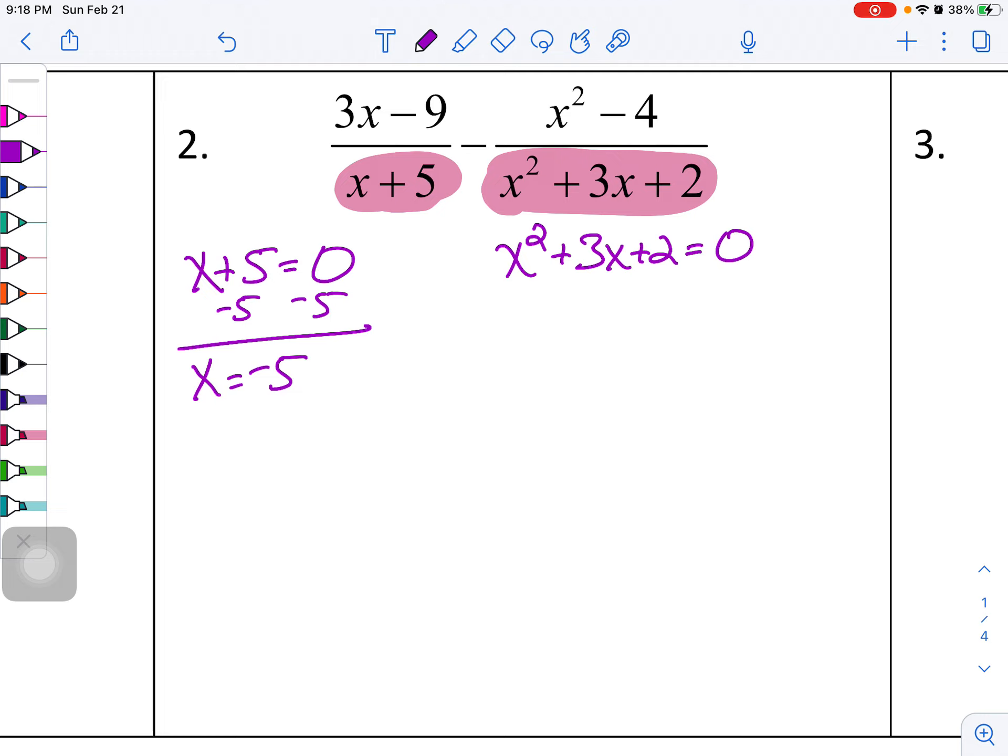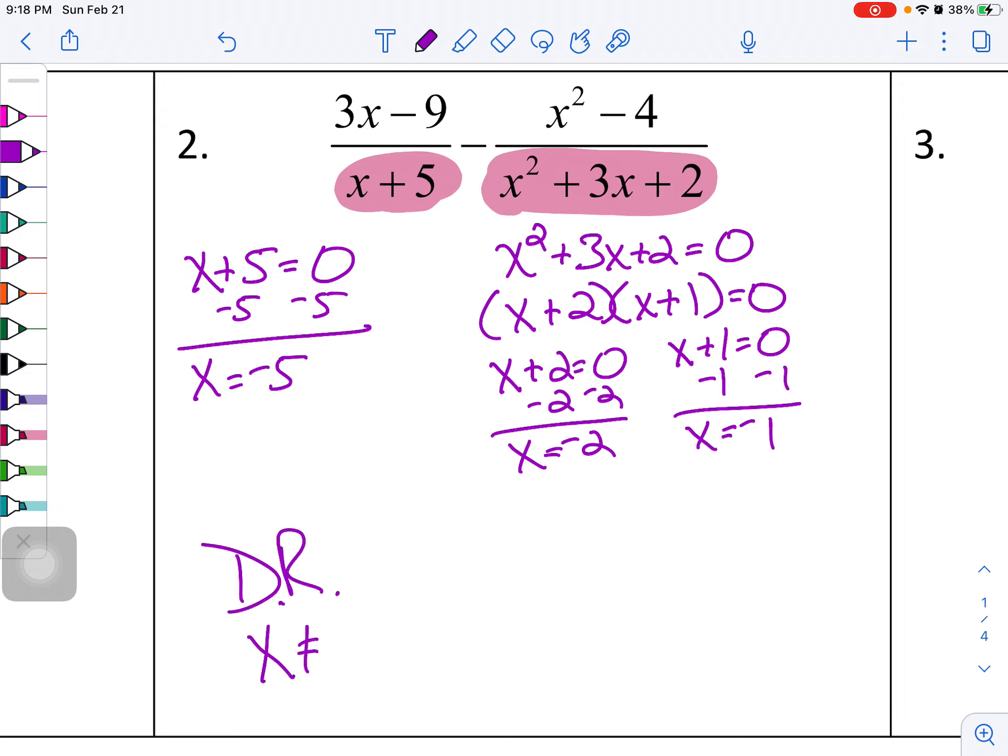So x equals negative five. Then I'm going to take my other denominator, x squared plus three x plus two equals zero. Let's see, x plus two, x plus one this time. I'm looking to multiply to two and add up to three. So that works. Take each of those factors equal to zero. Subtract two, x equals negative two. Subtract one, x equals negative one.